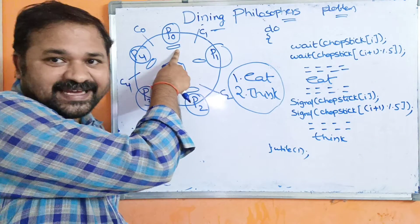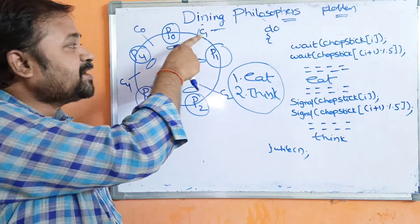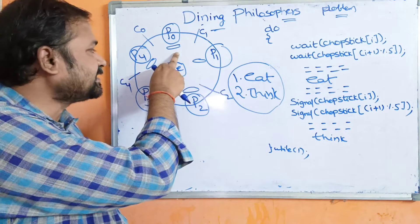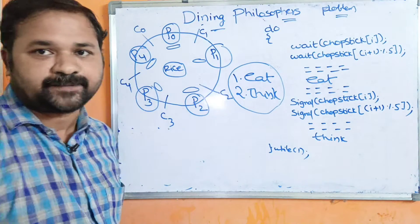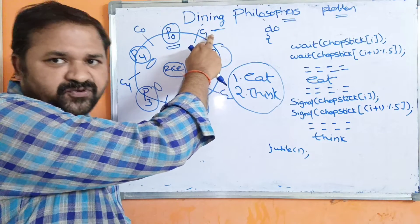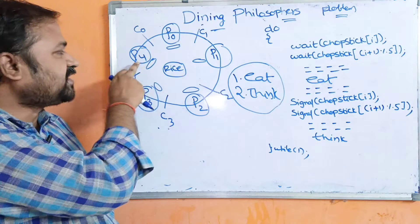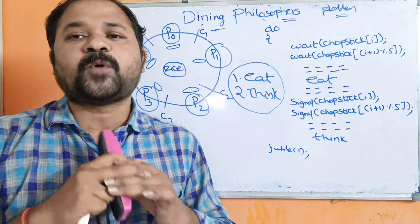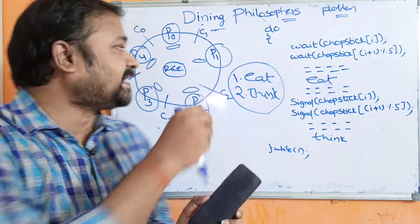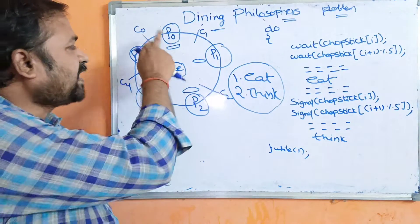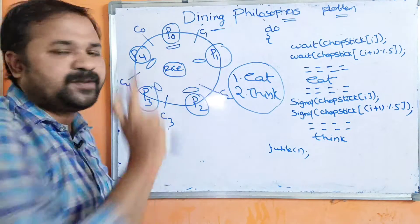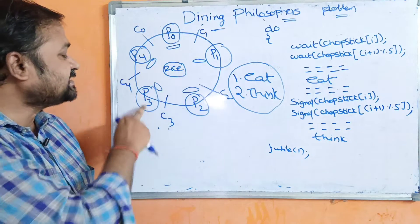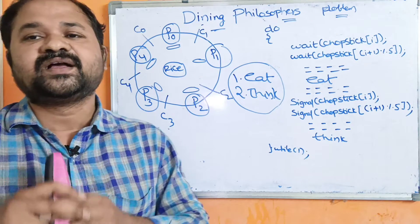Assume that P0 is eating — P0 grabbed C0 fork as well as C1 fork. Then we can say there is no chance for P1 and P4 to eat. Because in order to eat, P1 requires C1 fork, but C1 was already acquired by P0. If you consider P4, P4 requires C0 fork, but C0 was already acquired by P0. So it is not possible for adjacent philosophers to eat simultaneously. While P0 is eating, there is a chance for P2 and P3 to eat.